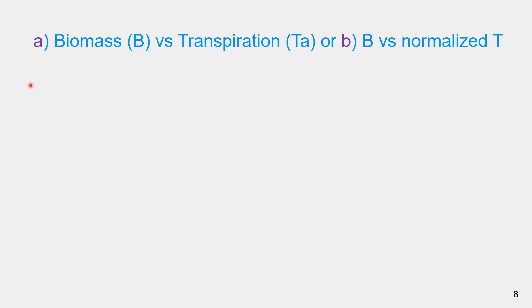The above ground biomass versus transpiration as well as above ground biomass versus cumulative normalized transpiration graphs can be used as agronomic tests for a dataset that is assumed to be under optimal condition or under different fertility stresses.